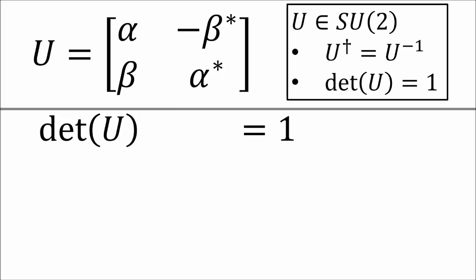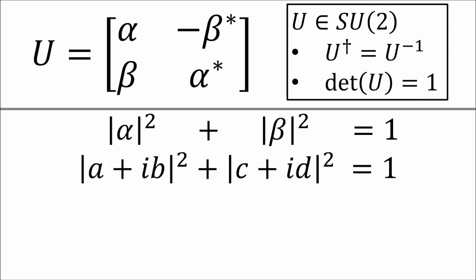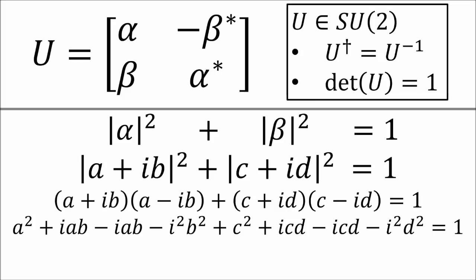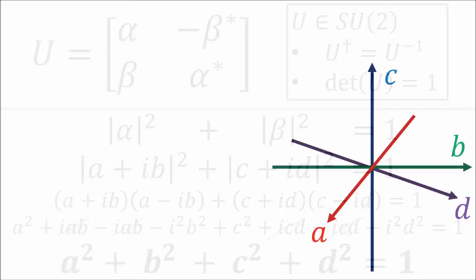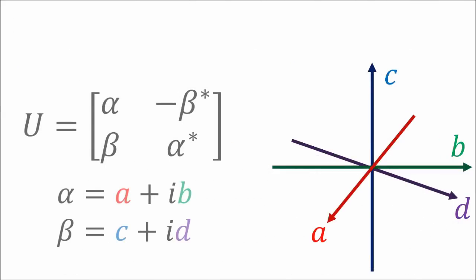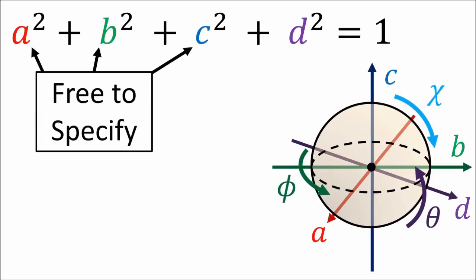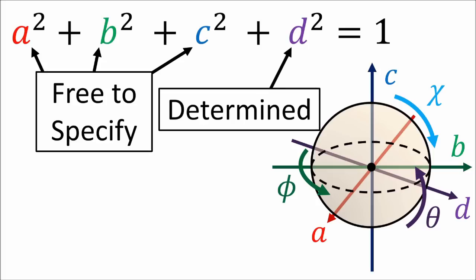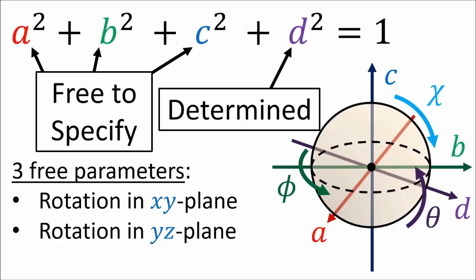Remember, the determinant equals plus one, so alpha alpha-star plus beta beta-star must equal one. If we replace alpha with the complex number a plus bi, and replace beta with the complex number c plus di, and distribute, we end up with the formula a² + b² + c² + d² = 1. If we think of a, b, c, and d as coordinate variables in four-dimensional space, this is the equation for a three-dimensional sphere. There are three free parameters — once we specify a, b, and c, then d is automatically determined by the equation. So the three-sphere is a three-dimensional space, parameterized by three coordinates. This makes sense since SU2 is the space of three possible rotations, in the xy-plane, the yz-plane, and the zx-plane.